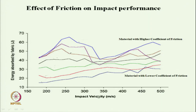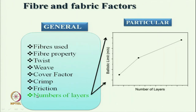The last parameter is number of layers. As we increase the number of layers the energy absorption becomes high and the ballistic limit increases. Fabric made of higher friction yarn gives higher energy absorption for different levels of impact velocity compared to lower friction yarn.